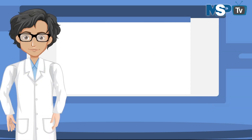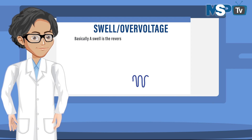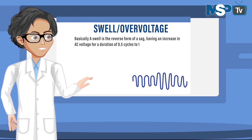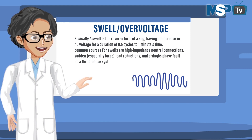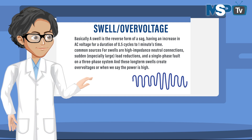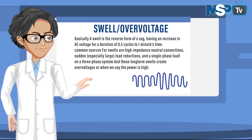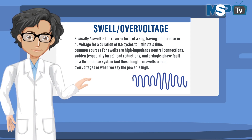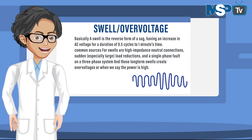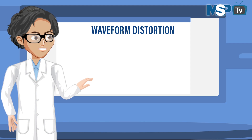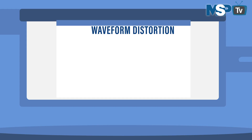The fourth problem is swell or over voltage. A swell is essentially the reverse of a sag — an increase in AC voltage for a duration of 0.5 cycles to one minute. Common sources for swells are high-impedance neutral connections, sudden or large load reductions, and a single-phase fault on a three-phase system. These long-term swells create over voltages, or what we say when the power is high.